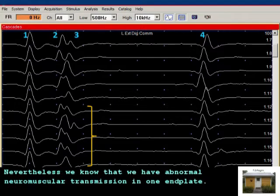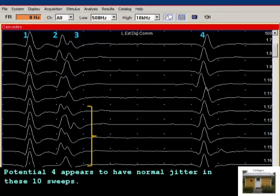Nevertheless, we know that we have abnormal neuromuscular transmission in one end plate. Potential 4 appears to have normal jitter in these 10 sweeps.